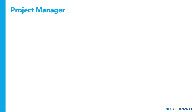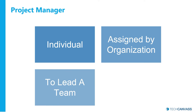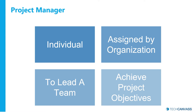Now let's get back to the presentation. Let's define Project Manager. The Project Manager is the person assigned by the Performing Organization to lead the team that is responsible for achieving the project objectives. This is the definition provided by PMI in its PMBOK Guide 6th Edition. The major responsibility of a Project Manager as mentioned in the definition is achieving the project objectives.